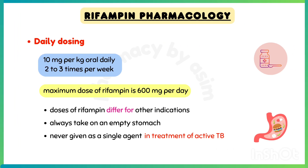Dosing of rifampin includes 10 mg per kg oral daily, or 2–3 times per week. The maximum dose of rifampin is 600 mg per day. Doses differ for other indications. This drug is always taken on an empty stomach. Because resistant strains rapidly emerge during monotherapy, it is never given as a single agent in the treatment of active tuberculosis.